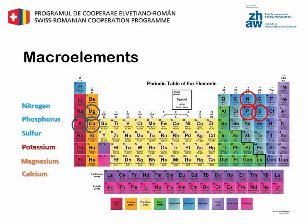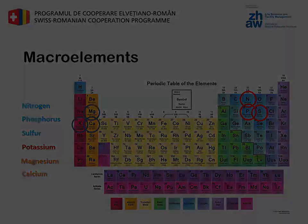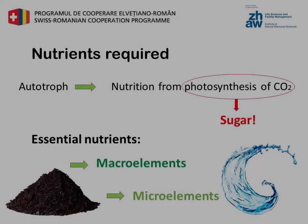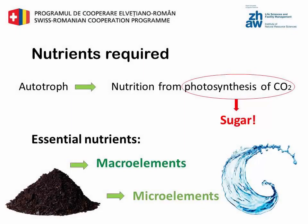If the fish sludge is not remineralized, this leads to insufficient release of phosphorus. The macro elements required by plants are nitrogen, phosphorus, sulfur, potassium, magnesium, and calcium.